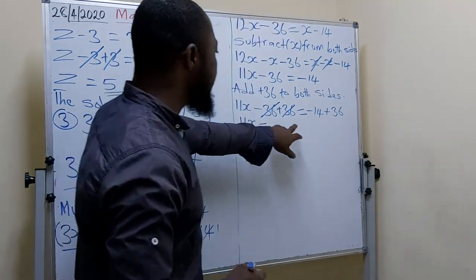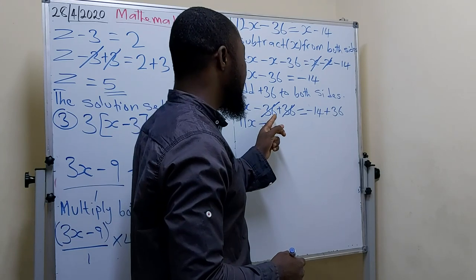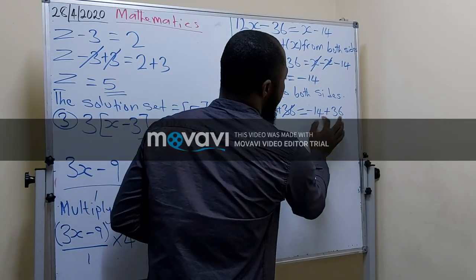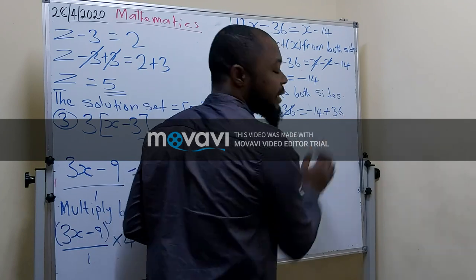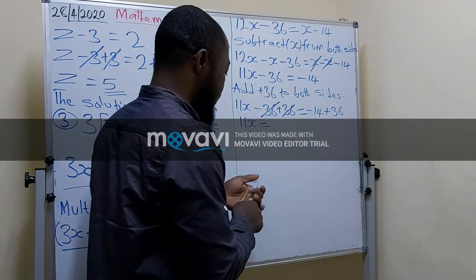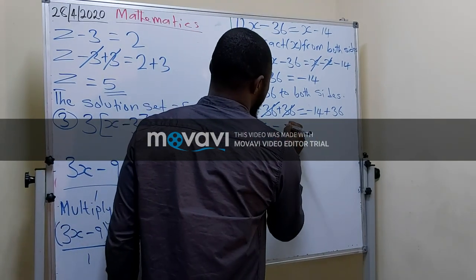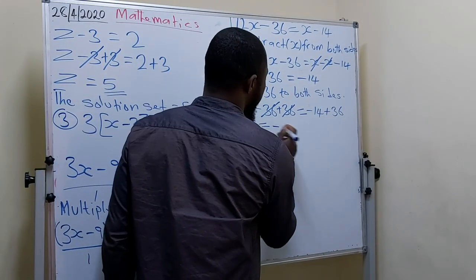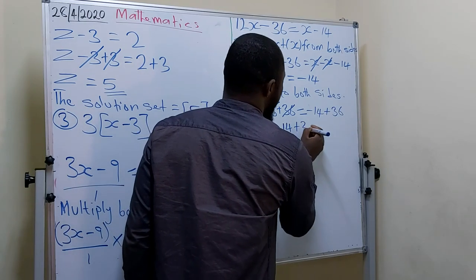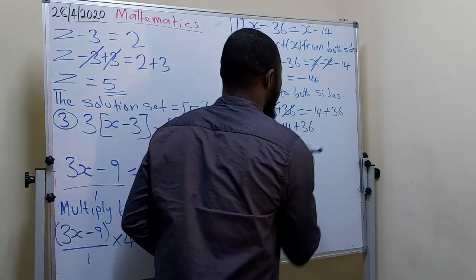We continue the class from where we stopped. We said 11x, we have done this side — remaining is minus 14 plus 36. Minus 14 plus 36: you take 36 minus 14, which is 22. So 11x equals 22.